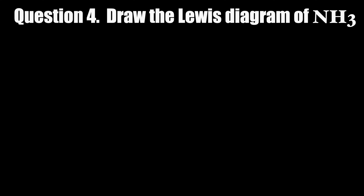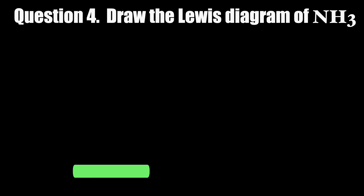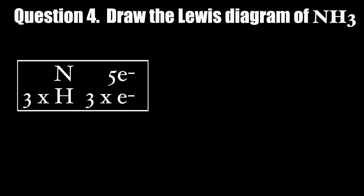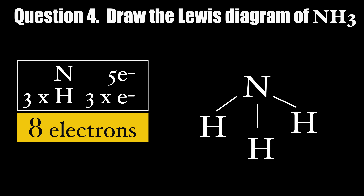Question 4: Draw the Lewis diagram of NH3. NH3 has 8 valence electrons. Nitrogen is the central atom with 1 lone pair of electrons.